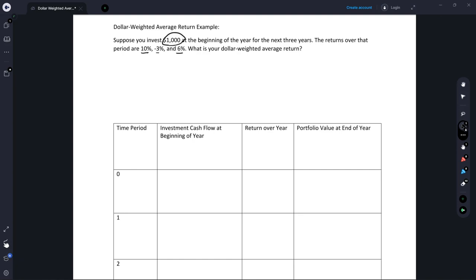So on a timeline, what this is going to look like is like this. So we've got our time periods, and we're going to contribute $1,000 at the beginning of each year. And then at year three, we're going to have some amount of money.